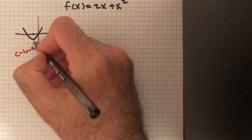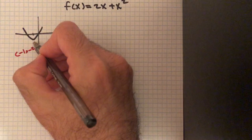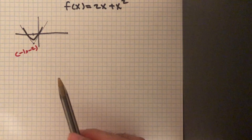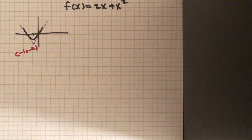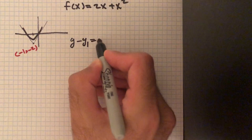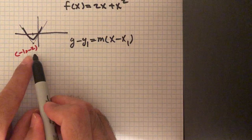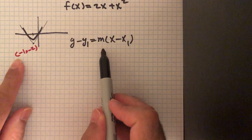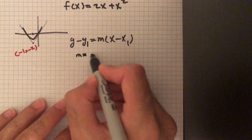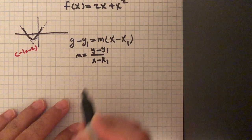If I draw a line here going through this point, this is one tangent line, and the other one is here. The first step to get the equation for the tangent line is to write the formula y minus y1 equals m times x minus x1. I have y and x, and maybe I can calculate m, the slope of the tangent line, using m equals y minus y1 divided by x minus x1.